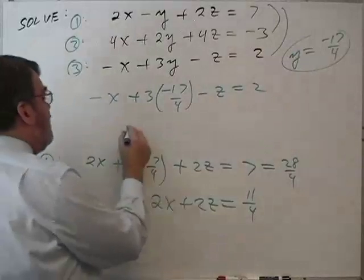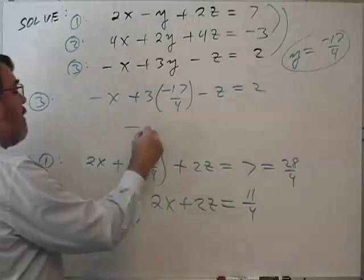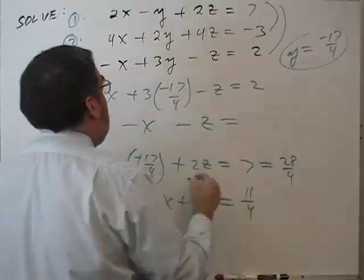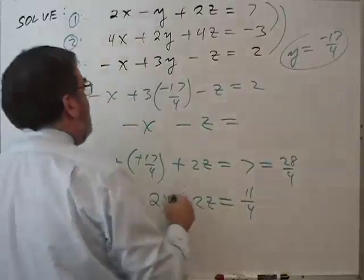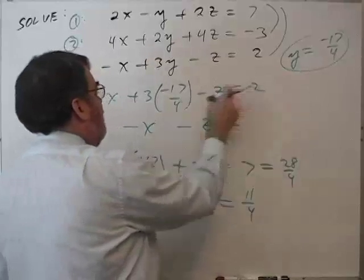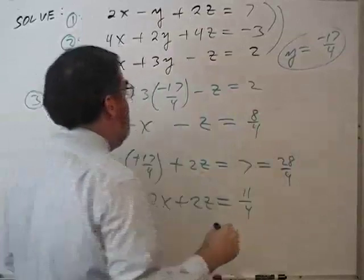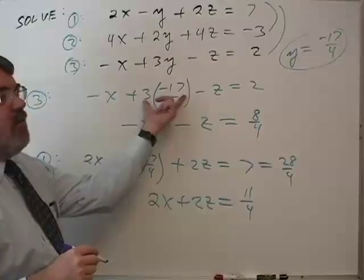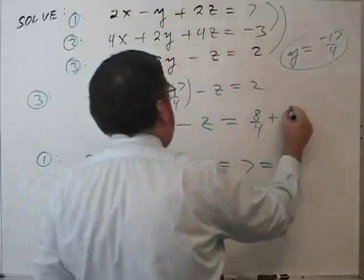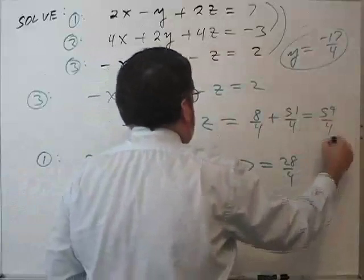And this becomes minus x minus z equals to the right-hand side. Let's see, I kind of jumped the gun here. I need fourths as my common denominator. So this is 8 fourths. This is negative 51 fourths. So when I add that term to both sides, it becomes plus 51 fourths on the right side. So the right side is 59 fourths.